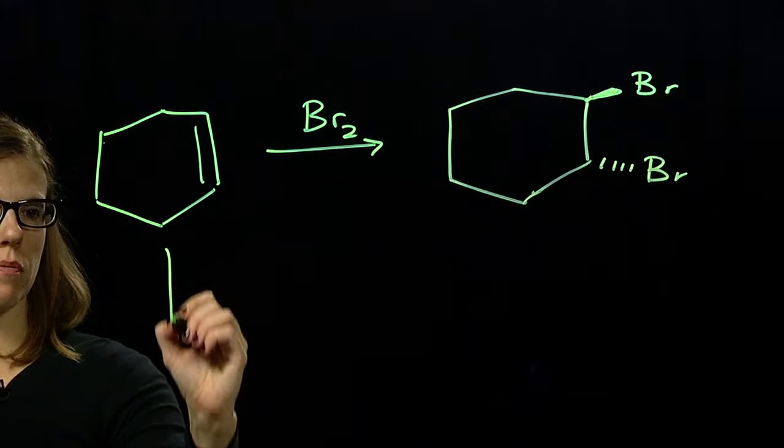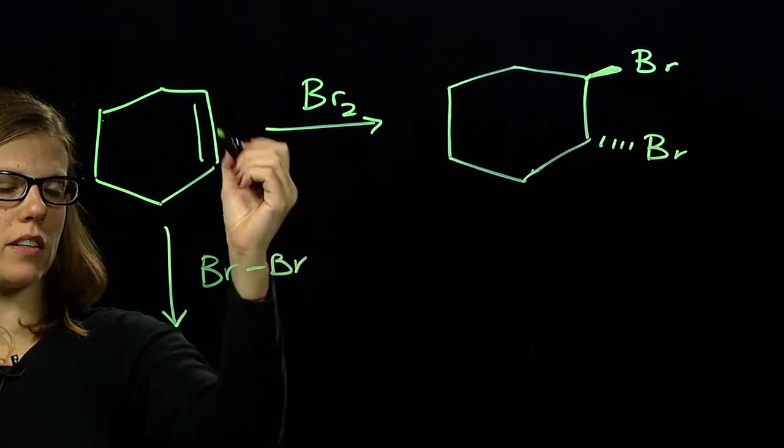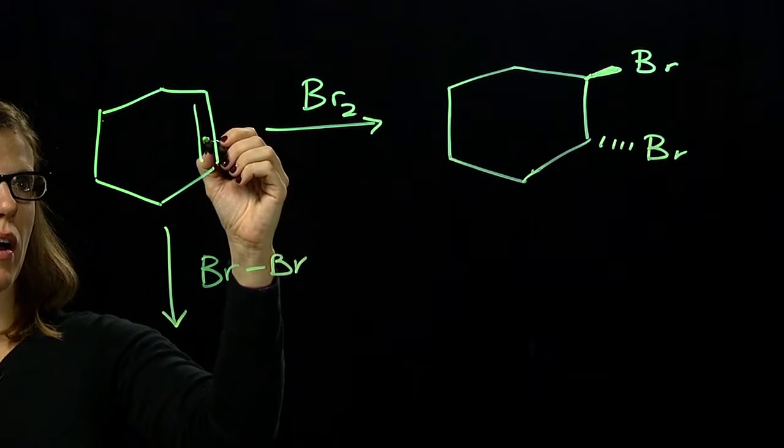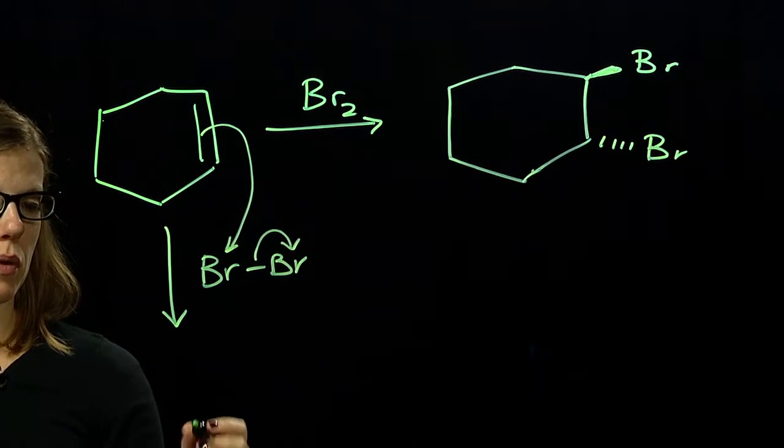So the first step of this reaction is the bromine reacting with the electrons of the double bond. The pi electrons here come out and attack the bromine.